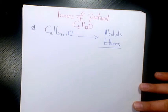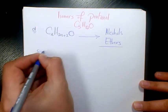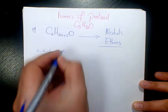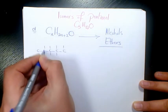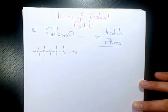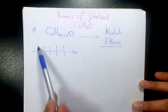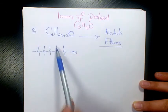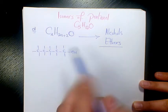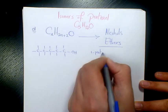Let's start with alcohols. The first isomer is going to be 5 carbons all connected, and this one we have an OH group. We must have 12 hydrogens — that's a primary alcohol, it connects to the first carbon and it's called 1-pentanol.